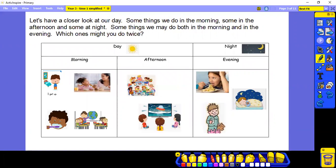So let's have a closer look at our day. Some things we do in the morning. Some things we do in the afternoon, after lunch. And some things we do in the evening, at night. And I've put here that sometimes we're in the day and then we're in the night. Some things we may do both in the morning and in the evenings. In a minute we'll have a think about which ones you might do twice.